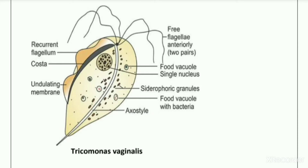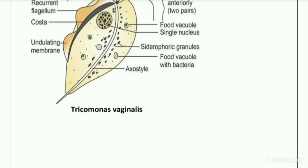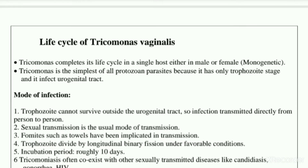As I displayed the diagram, this is the morphology and structure of Trichomonas vaginalis which is present in the vaginal secretion. The life cycle of Trichomonas vaginalis completes in a single host, either in male or female — that is what is called monogenetic.